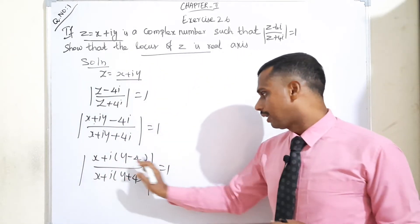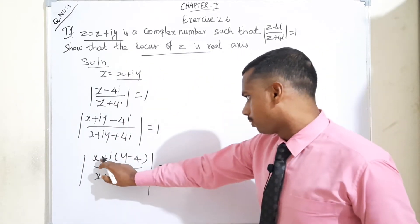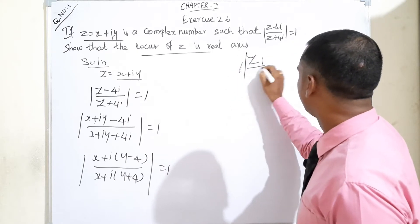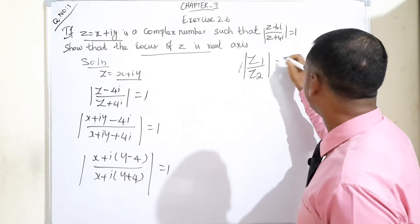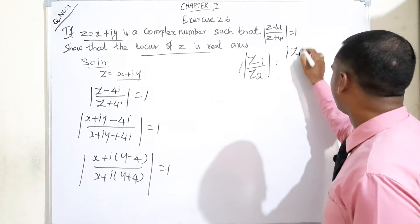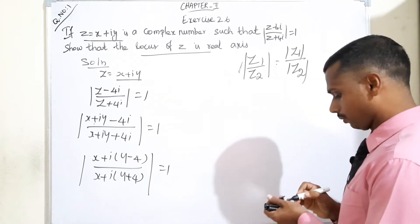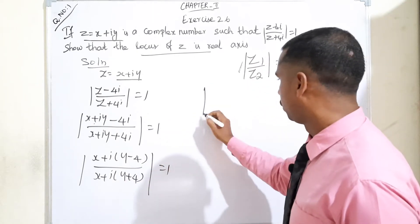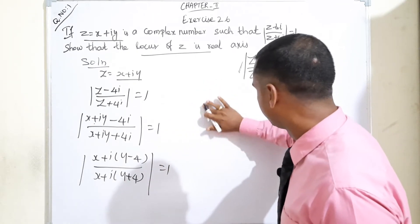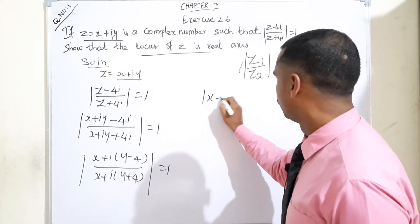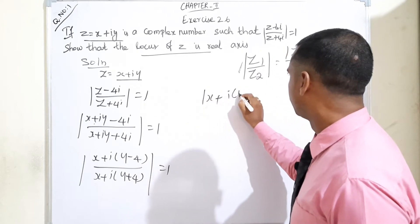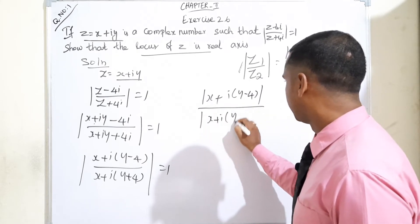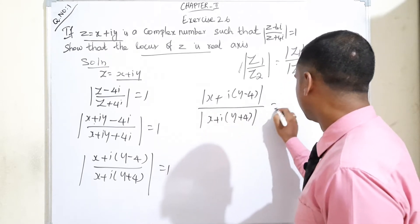We know one property: modulus of z1 divided by z2 is equal to modulus of z1 divided by modulus of z2. Applying that here: modulus of x plus i(y minus 4) divided by modulus of x plus i(y plus 4) is equal to 1.